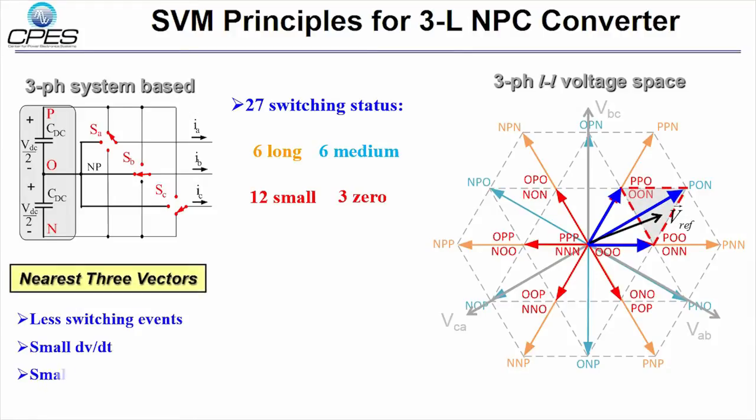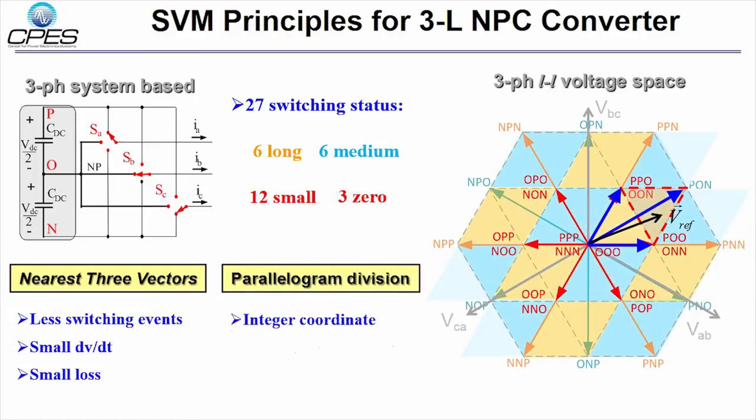Using only the nearest 3 vectors causes less switching events and related dv/dt and switching loss. Also, a parallelogram sector division method is used for calculation simplicity.